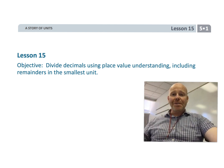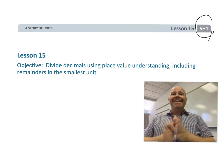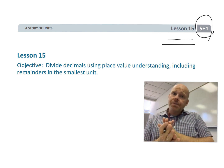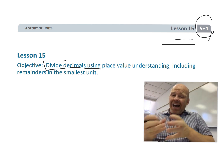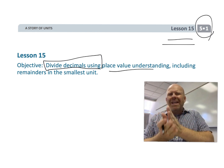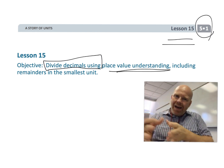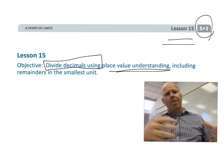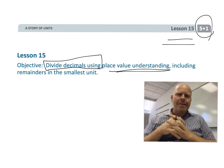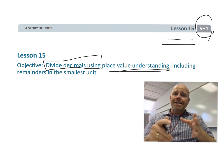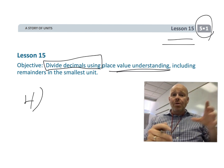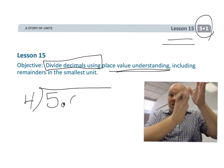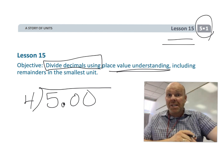This is fifth grade module one lesson 15, and in this lesson we're going to continue dividing decimals. We're going to be using place value charts but with an eye toward the standard algorithm. The key difference is students are going to be adding zeros because as we're dividing we're going to run out of digits and will need to keep going.